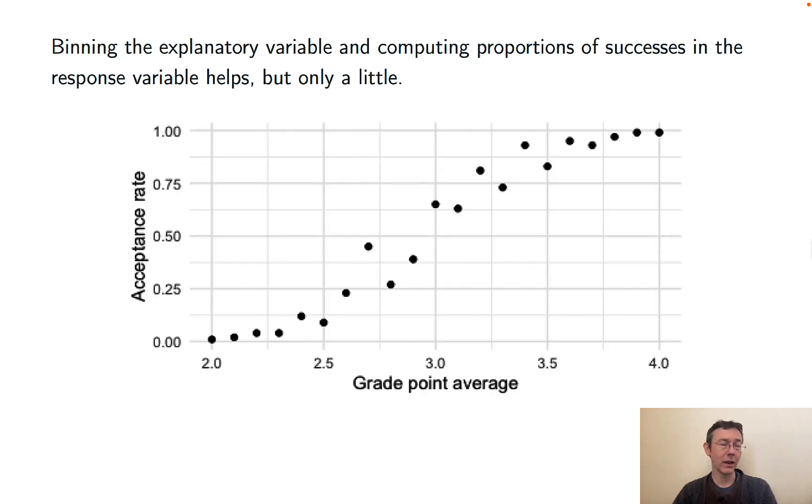So I've taken the data from that last slide and binned the GPAs in increments of 0.1, so 2, 2.1, 2.2, and so on. And then I've computed proportions of acceptance for each of those different bins. And here's a visualization of that data.